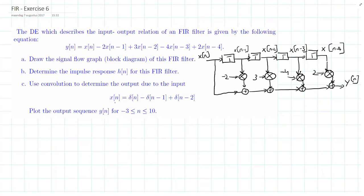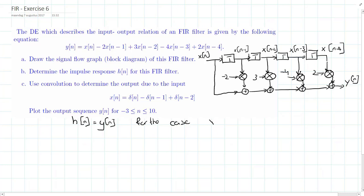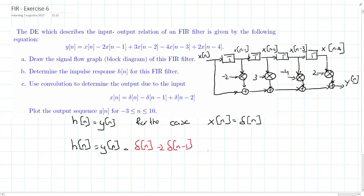For exercise b, determine the impulse response h[n] of this FIR filter. The impulse response of a filter is simply its output y[n] for the specific case that the input x[n] is equal to a delta pulse. By substituting delta[n] for x[n], the impulse response is: h[n] = δ[n] - 2δ[n-1] + 3δ[n-2] - 4δ[n-3] + 2δ[n-4].